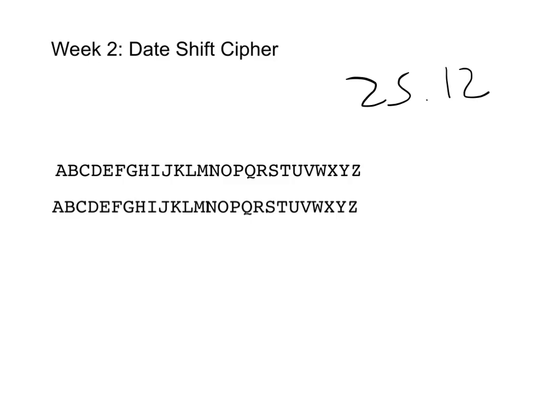What we're going to do is: the first letter in our code is moved by a shift of two, the second letter moves with a shift of five, the third letter moves by one, the fourth letter moves by two, and then we loop back — 2512, 2512. So for example, if we want to encode 'date shift', I'll write it out with no gaps like this.